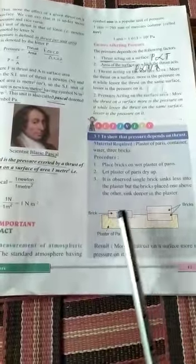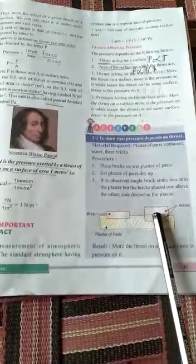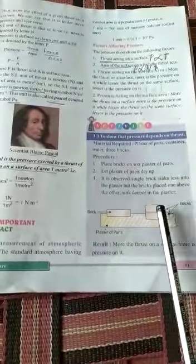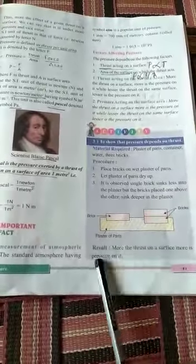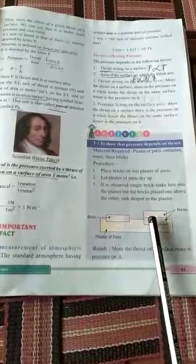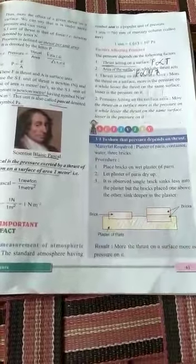It is observed that single brick sinks slightly into the plaster of paris, but the bricks placed one above other sink deeper into the plaster of paris. So, it proves that more the thrust on surface, more is the pressure. In double bricks, thrust quantity increases, so pressure also increases as comparison to single brick.